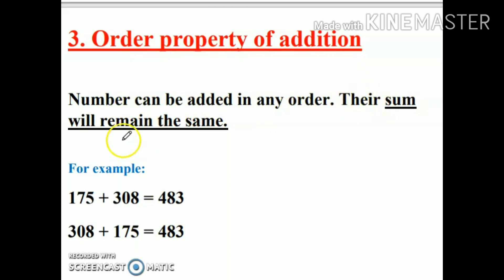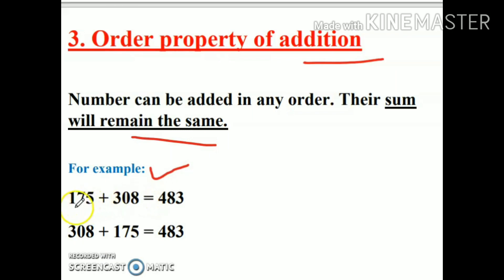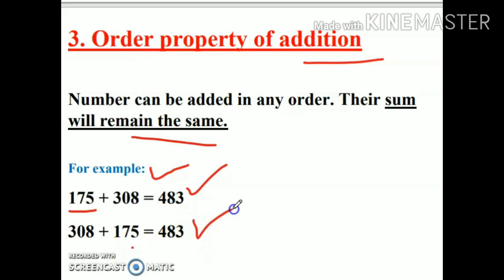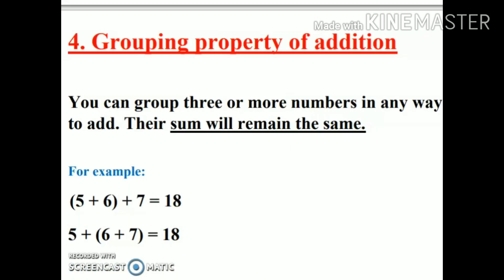Since we are talking about addition, we can write the numbers in any order. For example, I have two numbers: 175 and 308. When I write 175 first, my answer is 483. When I write the same number in the second place, my answer is still the same. So I can write the numbers in any order.